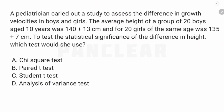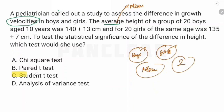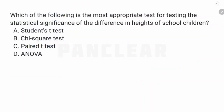The next question: a pediatrician carried out a study to assess the difference in growth velocities in boys and girls. The average height of a group of 20 boys and 20 girls is measured — so there are two groups. We are comparing the mean height between boys and girls. This is a parametric test comparing two groups, so the test used is the unpaired t-test, also called the student t-test or independent sample t-test.